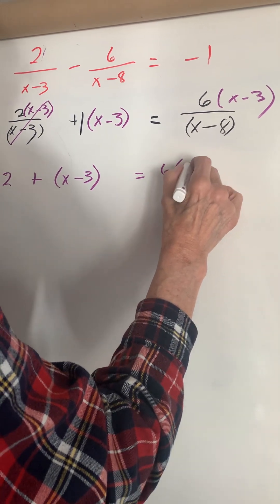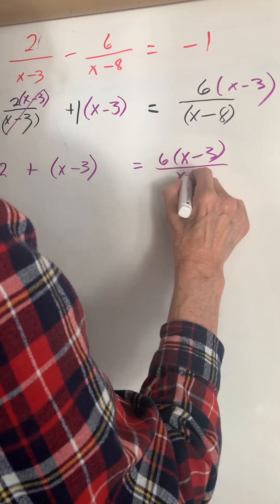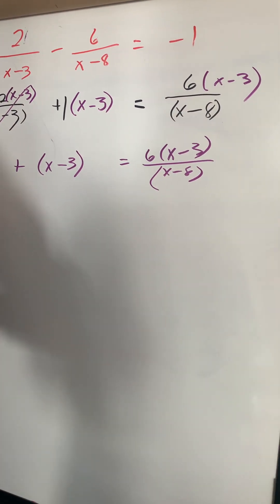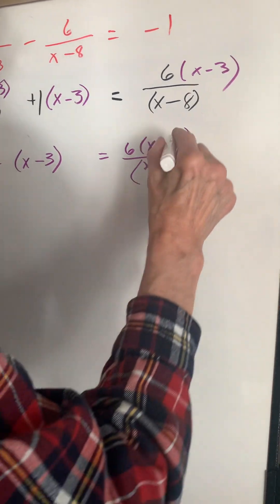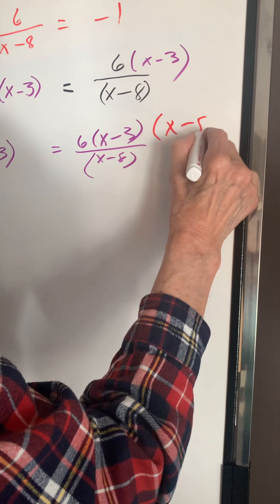Now we have to get rid of the x minus 8. We multiply each term by x minus 8.